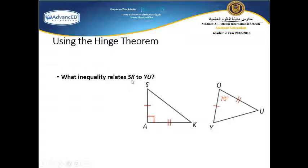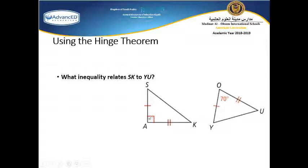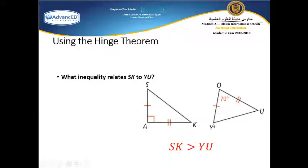What inequality relates SK to YU? Looking at these triangles, according to our theorem, there are two sides of the first triangle congruent to two sides of the second triangle: AS congruent to OY and AK congruent to OU. The included angle here is 90° and the included angle here is 70°. Since 90° is bigger than 70°, the opposite side SK is bigger than the opposite side YU.